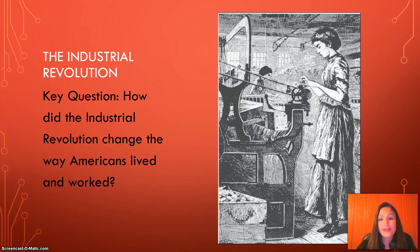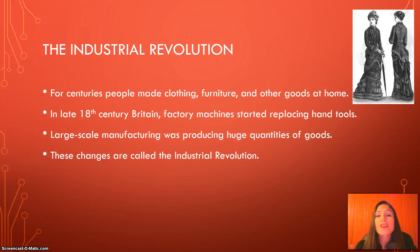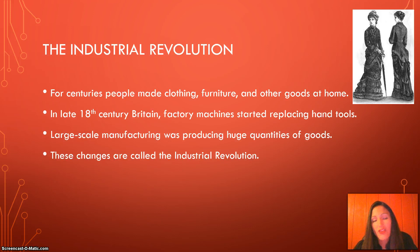For centuries, people made clothing, furniture, and other goods at home — they didn't just go to the store like we do today. In the late 18th century in Britain, factory machines started replacing hand tools. By doing this, large-scale manufacturing was producing huge quantities of goods, and these changes are called the Industrial Revolution.